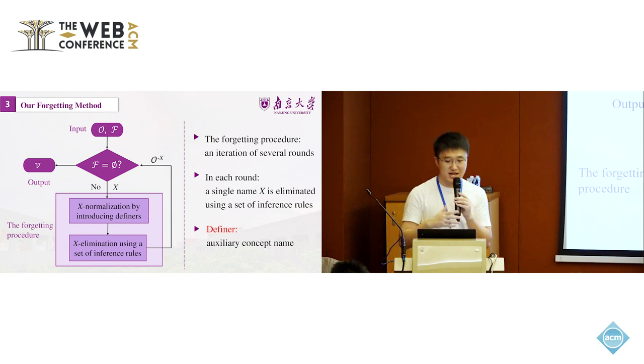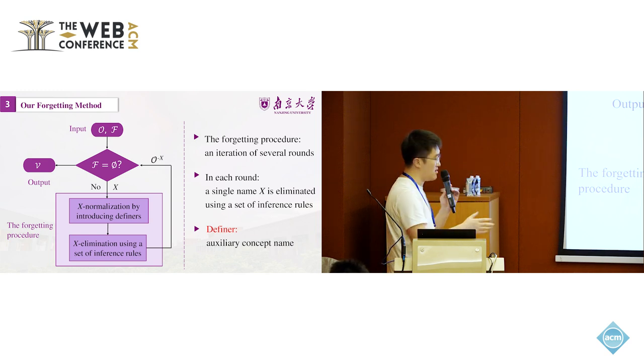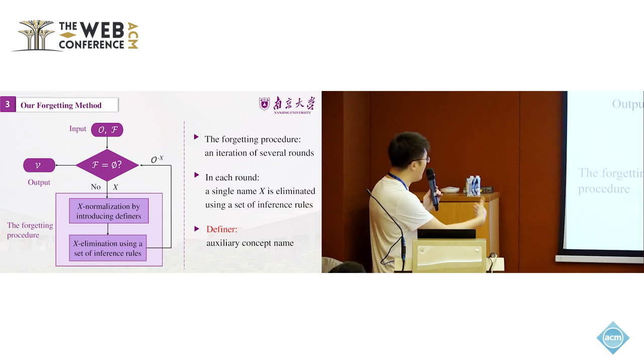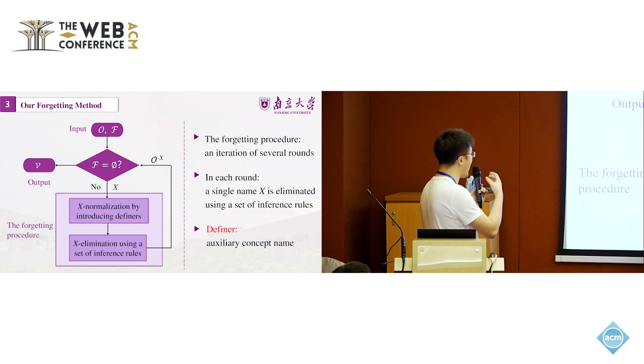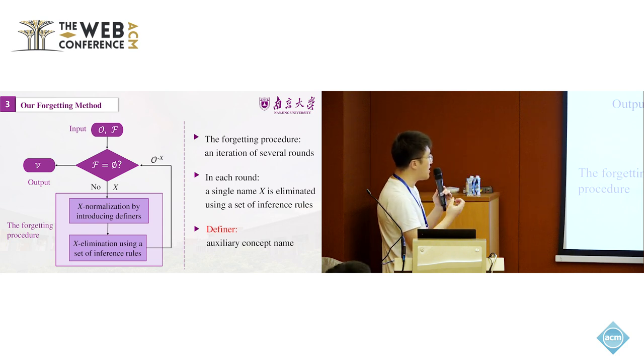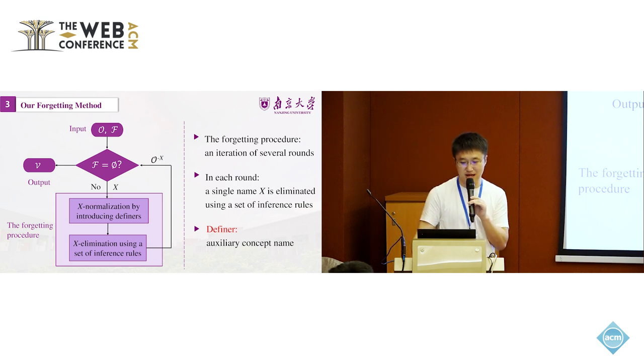Our forgetting method. This is the entire procedure of the forgetting of our method. The input are ontology O and the forgetting signature F. First, we check if F is empty. If it's empty, the input ontology is already the result. If not, we have to do something more complicated. If F is not empty, first we need to go around a procedure of iteration of several runs. In each run, a single name, either a concept name or a role name X, is eliminated using a set of inference rules. Before the application of the inference rules, we have to do something called X normalization. It's a normalization procedure where we have to introduce an auxiliary concept name called definers. This is a key step in our method.